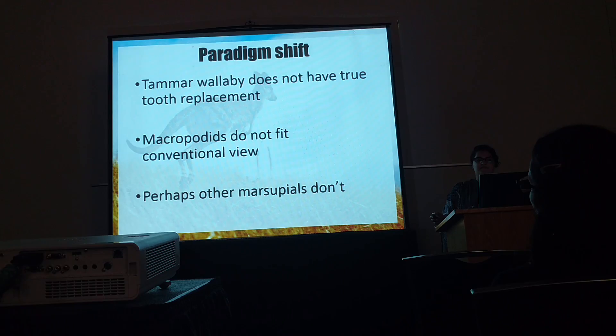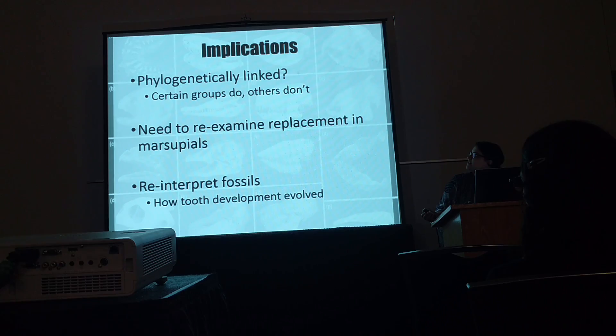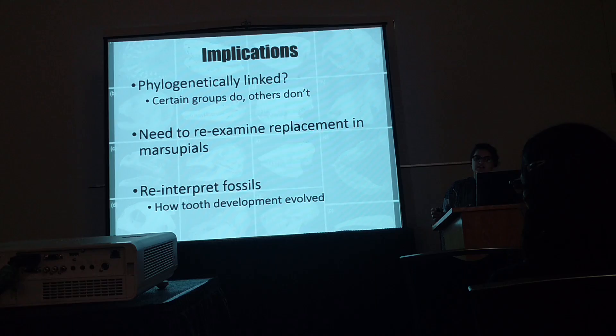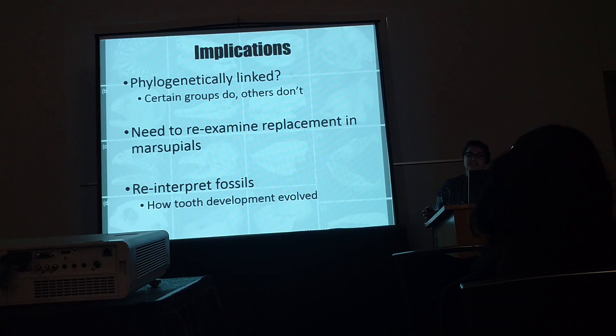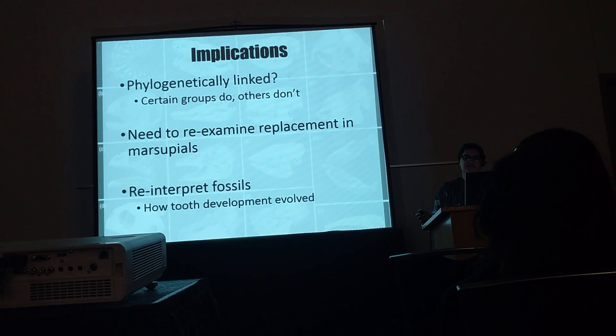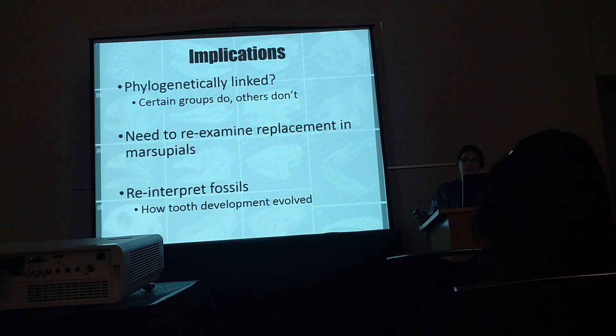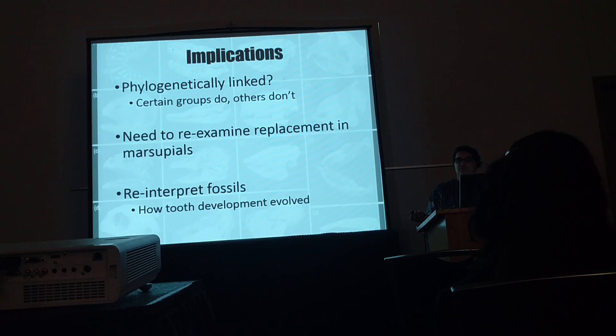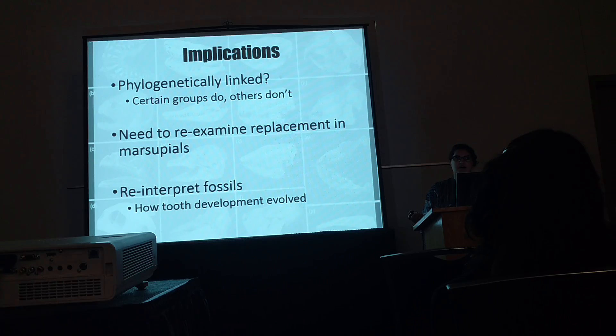Is this phylogenetically linked? Was there a common ancestor that had true tooth replacement, and then a split between these groups? We need to re-examine tooth replacement in marsupials. This also has implications for how we look at long-term marsupial and mammalian evolution, because a fossil is just a snapshot in time and you just see a row of teeth — and now we know that it might not be the tooth that we thought we saw. So we need to re-examine the fossil record as well.